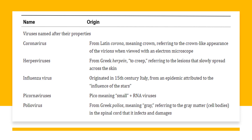Viruses have also been named after their properties. Coronavirus is named after the Latin word 'corona' meaning crown, for their crown-like appearance under the electron microscope. Herpesvirus comes from the Greek word meaning 'to creep,' referring to lesions that slowly spread across the skin. The word influenza was coined in 15th-century Italy where an epidemic was said to be caused by the influence of the stars. Picornaviruses are named from 'pico' meaning small and having an RNA genome. Polioviruses are named after the Greek word 'polios' meaning gray, for the gray matter in the spinal cord that the virus infects and damages.